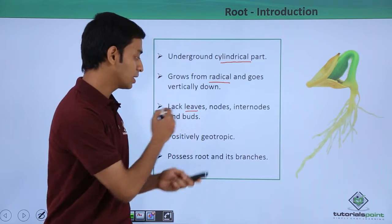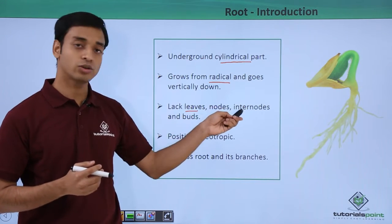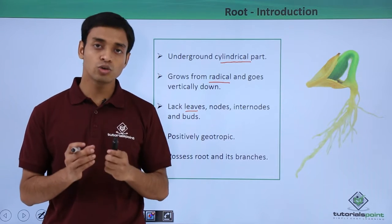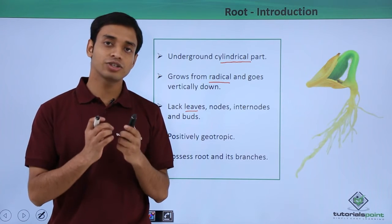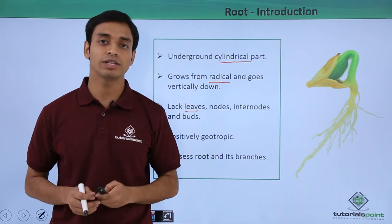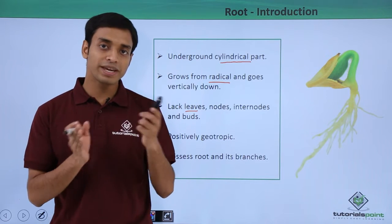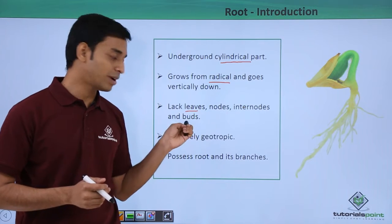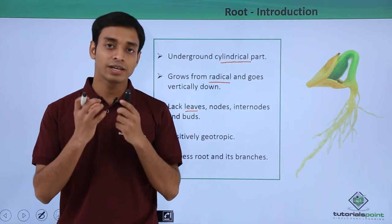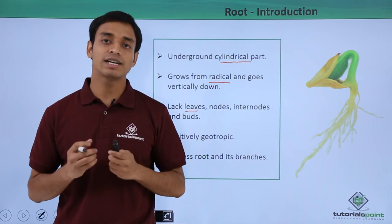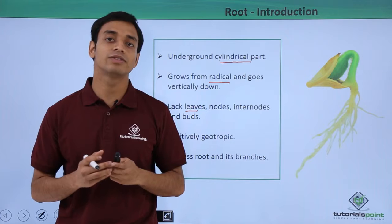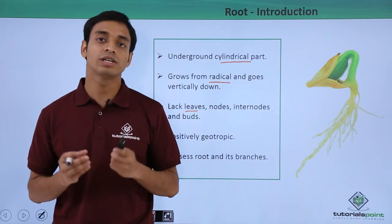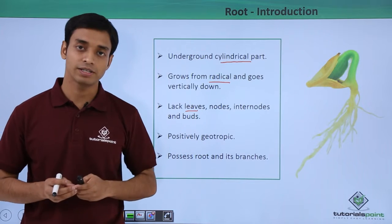Roots lack leaves, they do not have nodes and internodes, and also do not possess buds. Nodes are junctions or structures mostly found in the stem. The space between two nodes is known as internodes. Buds are the reduced or condensed structures which later give rise to various structures in the stem like flowers, fruits, and leaves.